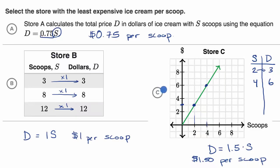So store C is the most expensive, followed by B, and then store A is the cheapest, and that's what they're asking us. The least expensive ice cream per scoop is store A.